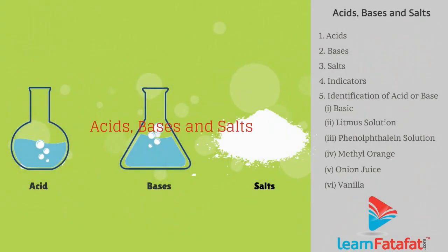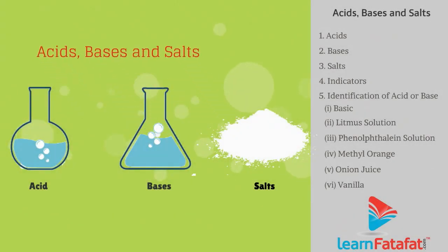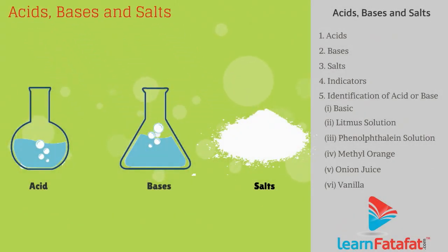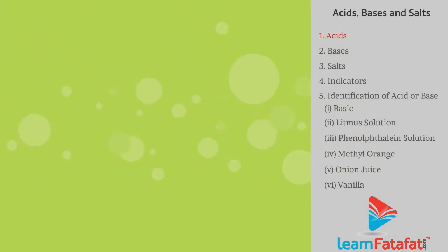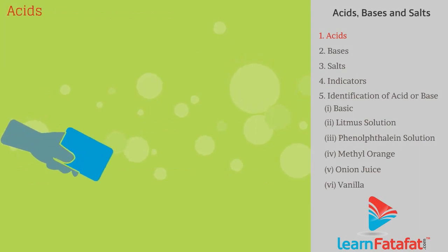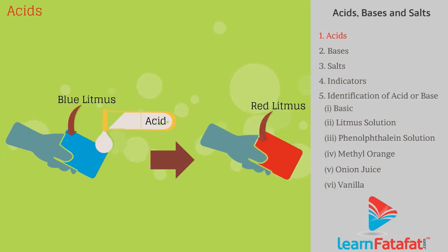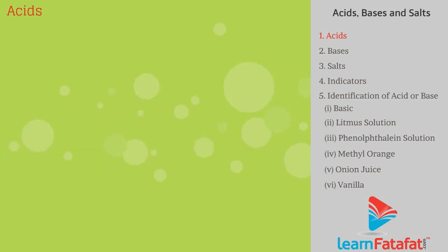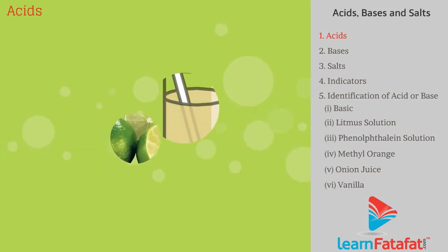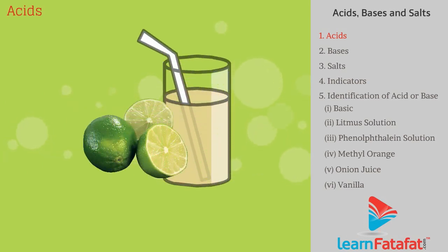Acids, bases and salts. Acids are the chemicals that turn blue litmus to red. Acids are sour in taste. For example, lemon juice.